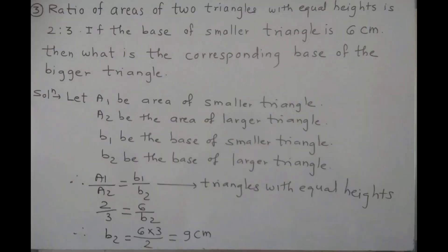Question number 2. The ratio of areas of two triangles with equal height is 2 is to 3. If the base of the smaller triangle is 6 cm, then what is the corresponding base of the larger triangle? Here, triangles have equal heights — it is given.